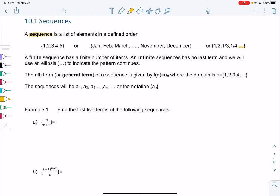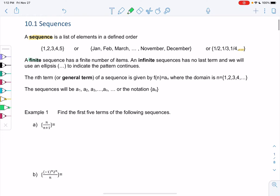So the first type of sequence is called finite. A finite sequence has a finite number of items. So the first two would be finite. They end.